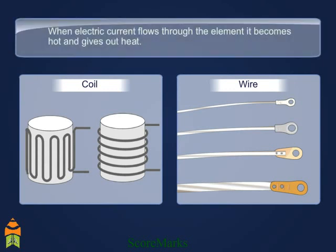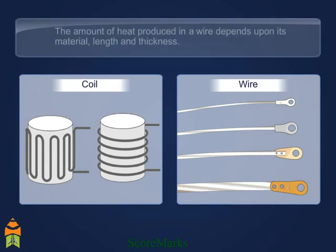When electric current flows through the element, it becomes hot and gives out heat. The amount of heat produced in a wire depends upon the material, length, and thickness.